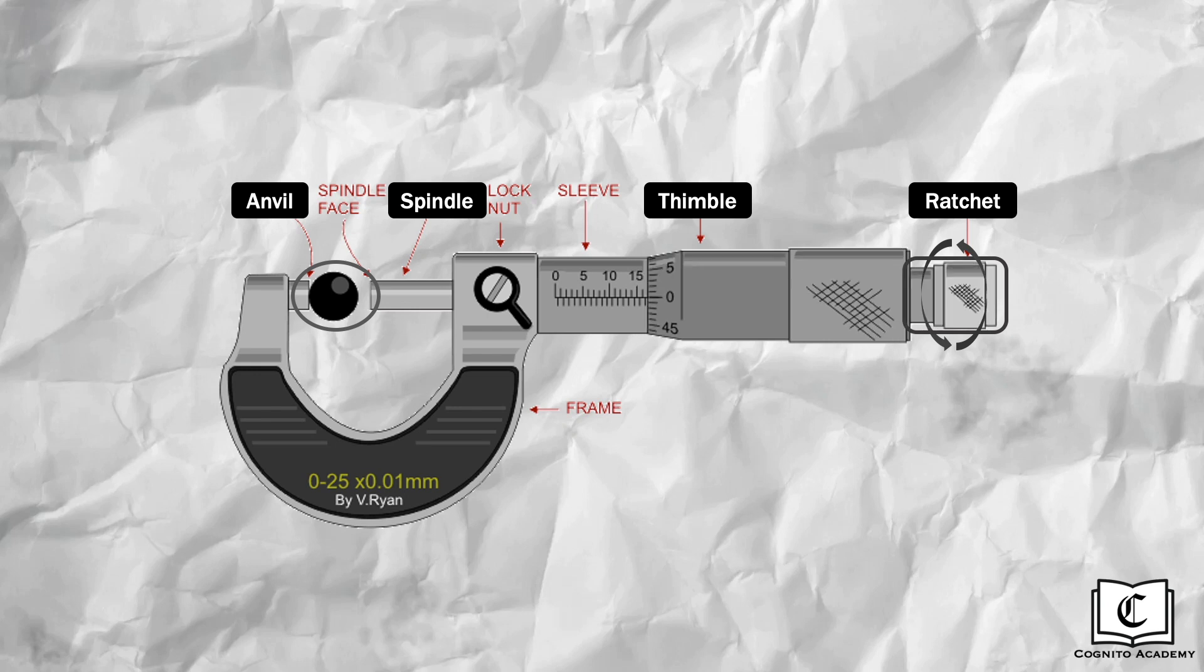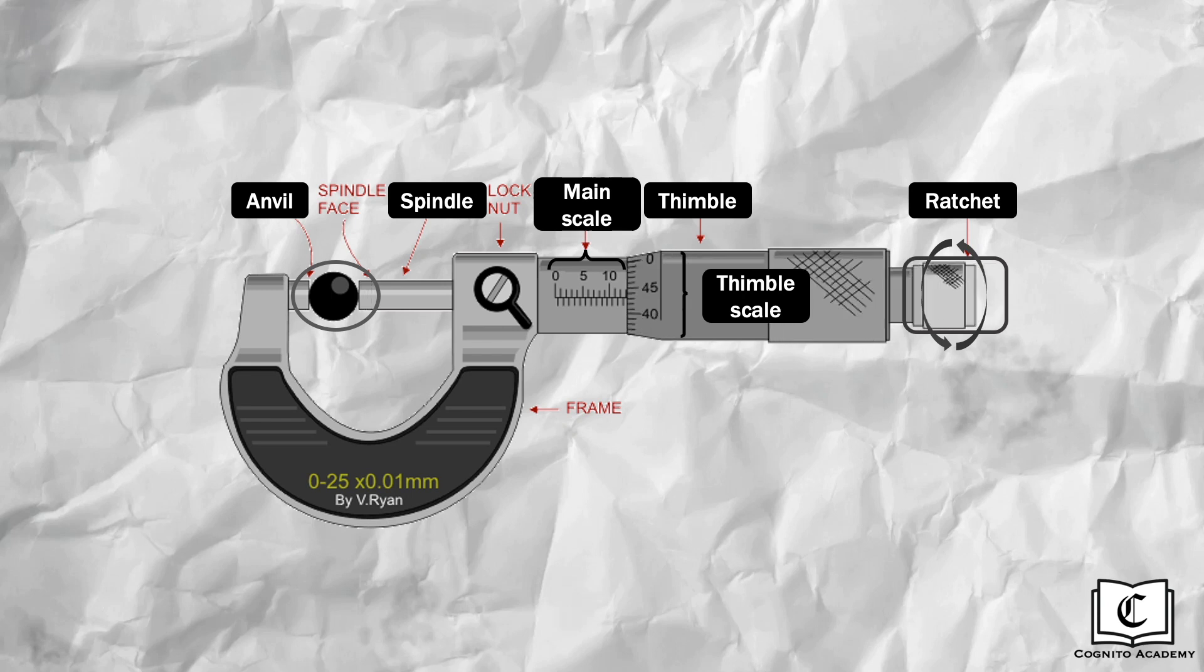Now, we will take the reading by reading the main scale followed by the more precise timbre scale. The precision of the micrometer screw gauge is one decimal place more than the vernier caliper, measuring to 0.01 mm.